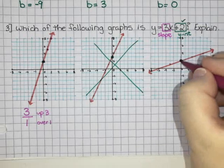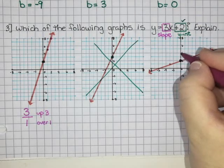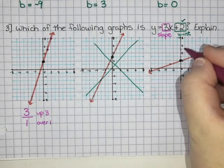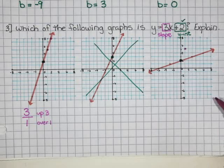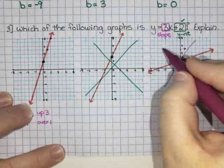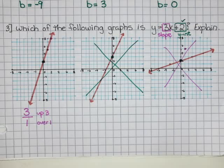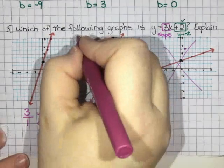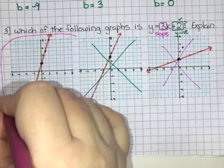If I look at this one, if I go 1, 2, 3 up and 1 over, I am not on that line, which means it is not line number 2. So our winner is line A.